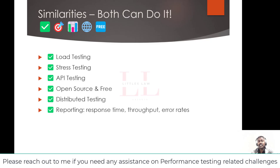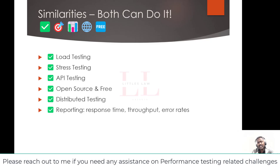For really massive loads, both JMeter and K6 can be set up to run tests across multiple machines — and you won't pay anything for licenses since both are free and open source. Finally, they both provide reports with key metrics like response times, throughput (requests per second), and error rates. Both tools perform the core job of performance testing, but now let's look at what makes them different.